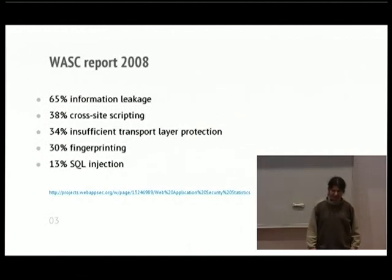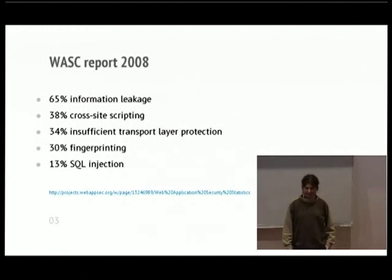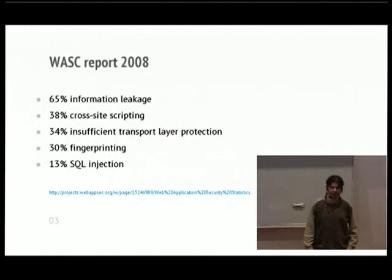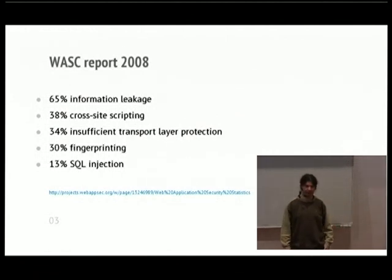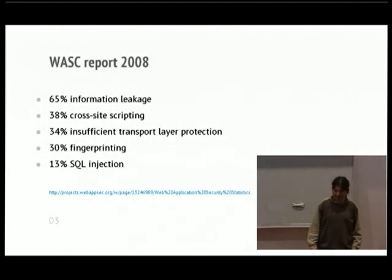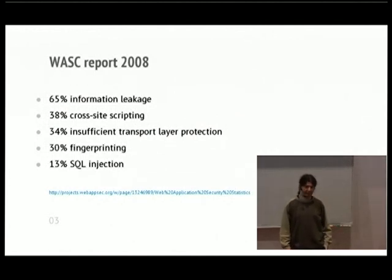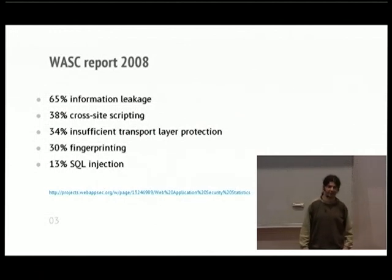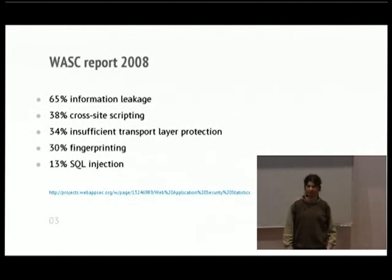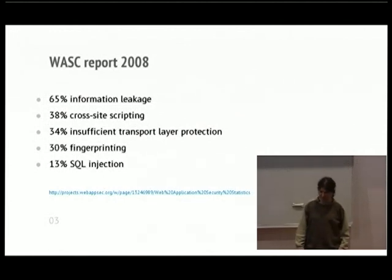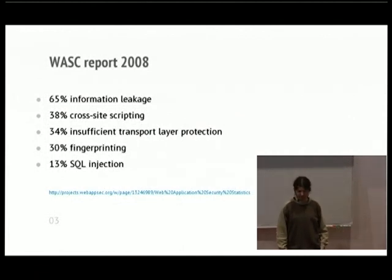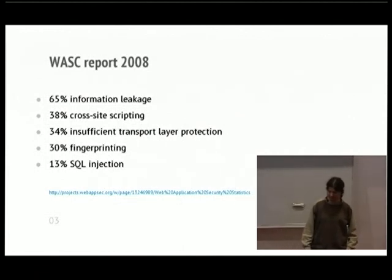34% of websites got problems with HTTPS configuration and other transport layer settings. For one third of the websites, you could identify the software that runs there, and then you could attack specific vulnerabilities in the specific versions of the software. And there are the usual SQL injection problems which affected 13% of the websites.